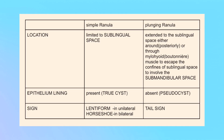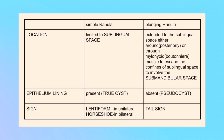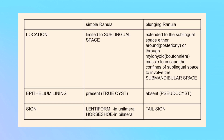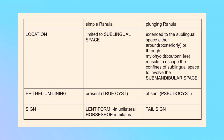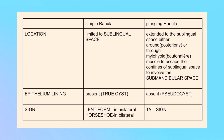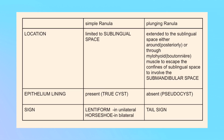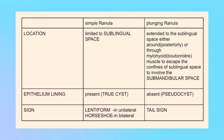Because of the extravasation of plunging ranulas into the submandibular space, they give a specific imaging sign known as the tail sign, in which the ranula is seen as a small tail extending into the sublingual space via the submandibular space.